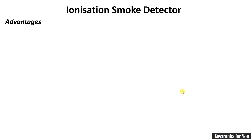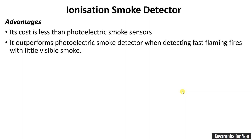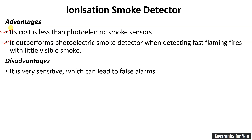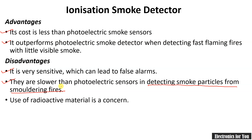Now let's see the disadvantages of the ionization smoke detector. It is very sensitive, which can lead to false alarms, and it is slower than the photoelectric sensor in detecting smoke particles from smoldering fires. Additionally, it uses radioactive material, which is a concern.